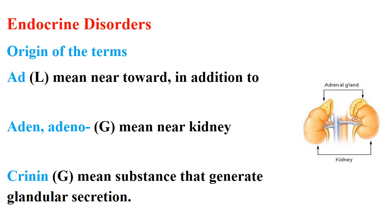Another term is 'crine', meaning a substance that generates glandular secretions — it stimulates the gland to produce and secrete hormones, which we will learn about in the upcoming slides.